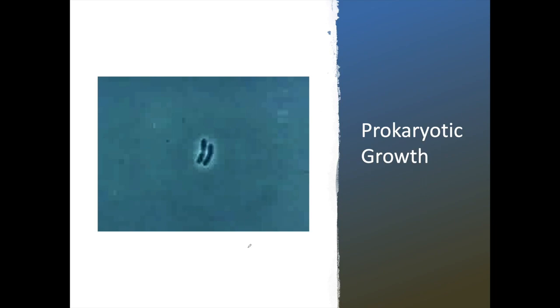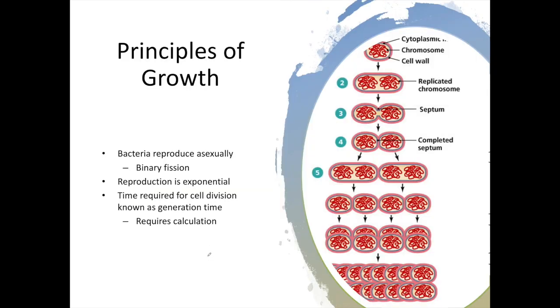Hello and welcome to chapter four on prokaryotic growth. In this chapter we're going to take a look at the growth of bacteria over time and different factors that affect growth both in the laboratory and in the environment. For part one of this lecture, we're going to talk about some principles of growth and look at how to calculate generation time and number of generations.